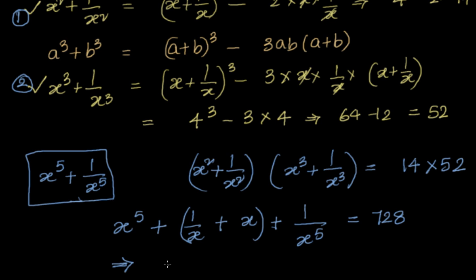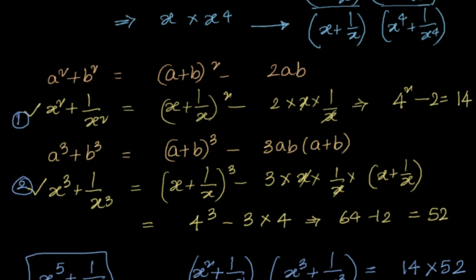Now, what we need is x power 5 plus 1 by x power 5, which is equal to 728 minus this middle value, which is nothing but equal to 4, since x plus 1 by x is 4. So 728 minus 4 is equal to 724. So x power 5 plus 1 by x power 5 is equal to 724 if x plus 1 by x equal to 4.